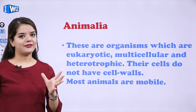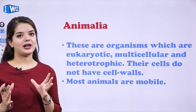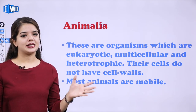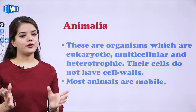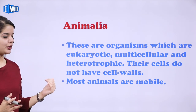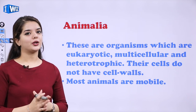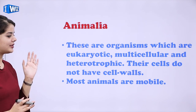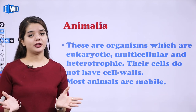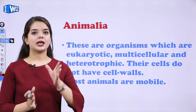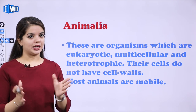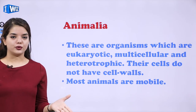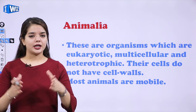Eukaryotic means they have a well-defined nucleus — isi liye unhe eukaryotes kehte hai. Multicellular means bohut saari cells se yeh bane hote hai, they are not made up of just a single cell. Thirdly, they are heterotrophic — matlab ki apna khana yeh khud nahi banaate, yeh doosron pe depend hoti hai for food. Their cells do not have cell walls, and most animals are mobile — that is, we also belong to this group and we can move.